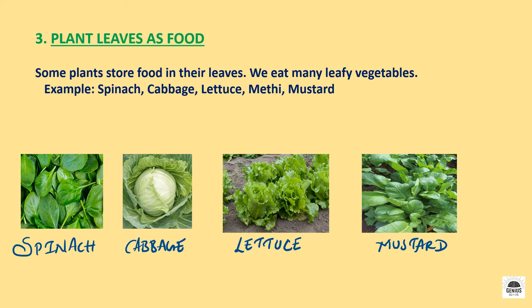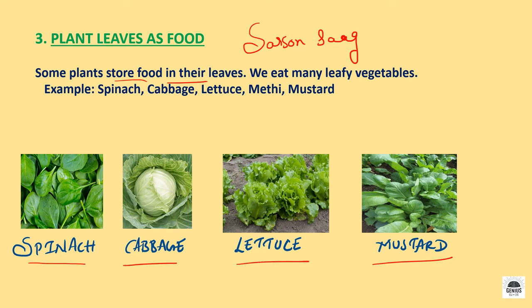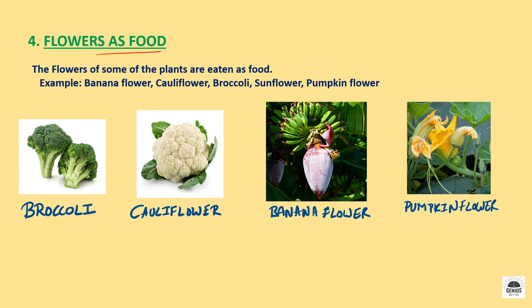Now, plant leaves as food. The favorite dish of Punjab prepared from a leafy vegetable is sarsu saag, which is made from mustard leaves. Some plants store food in their leaves. We eat many leafy vegetables like spinach, cabbage, lettuce, methi, etc. Now, flower as food. We eat flowers of many plants like broccoli, cauliflower, banana flower and pumpkin flower. These plants store food in their flowers.